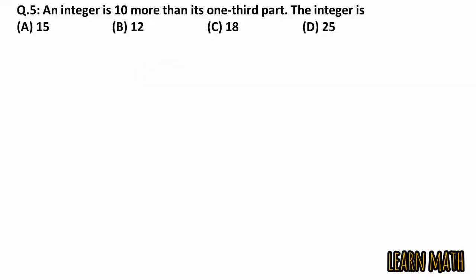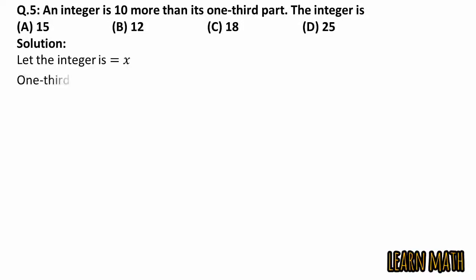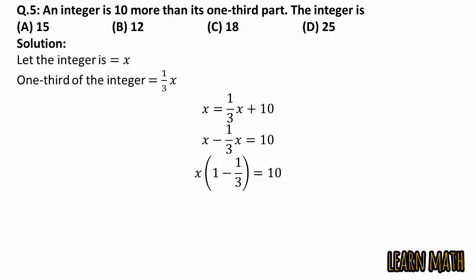The fifth question is: an integer is 10 more than its one-third part. What is the integer? These are the 4 options. Let the integer be X, so one-third of the integer is X/3. Since the integer is 10 more than its one-third, we write X = X/3 + 10. Taking X common and finding LCM: X(1 - 1/3) = 10, which gives (2/3)X = 10. Multiplying both sides by 3/2, we get X = 15. The correct option is option A.